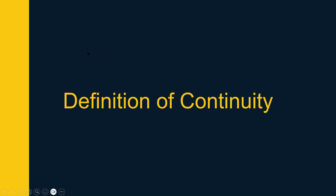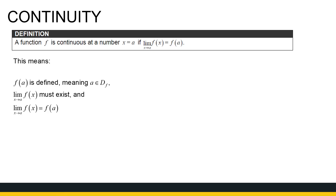In the previous video we looked at the concept of continuity to get a gut feel of what it means for a function to be continuous at a specific x value. Now we're going to formally define continuity. A function f is continuous at a number x equal to a if the limit as x approaches a of f of x is equal to f of a.